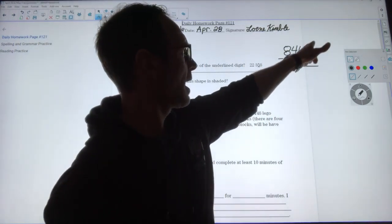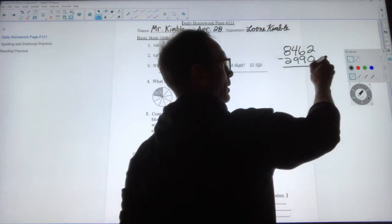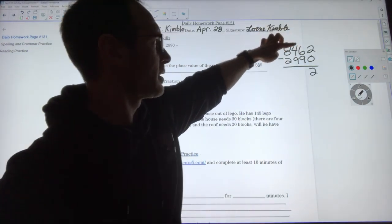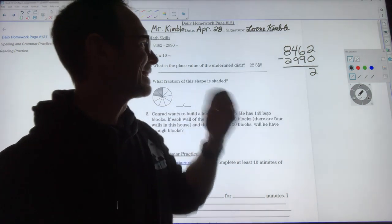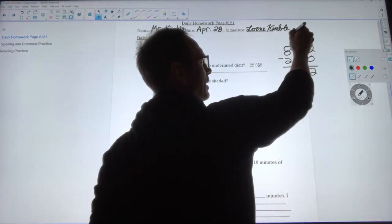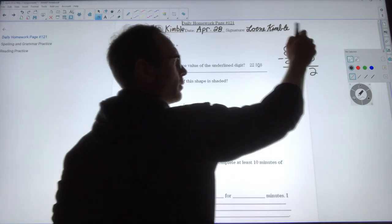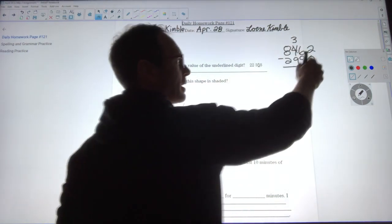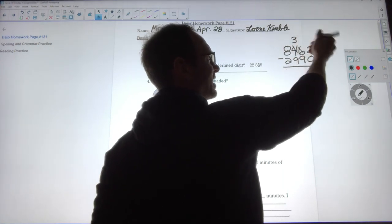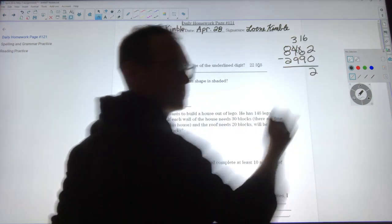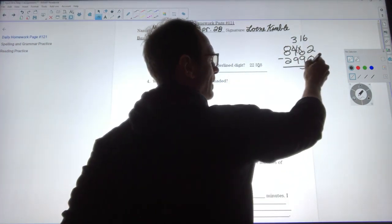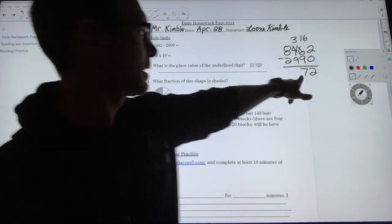I'm gonna move over to the ones place and 2 minus 0, that's just 2. Now 6 minus 9, the 6 tens minus 9 tens, I can't do without borrowing so I'm gonna borrow from the hundreds place. I'm gonna take a hundred from here, that's gonna leave 300 in the hundreds place and I'm gonna put that hundred over to the tens place so now that's gonna be 160 here or 16 tens. If I know 16 minus 9 is 7, that means that this is 70.